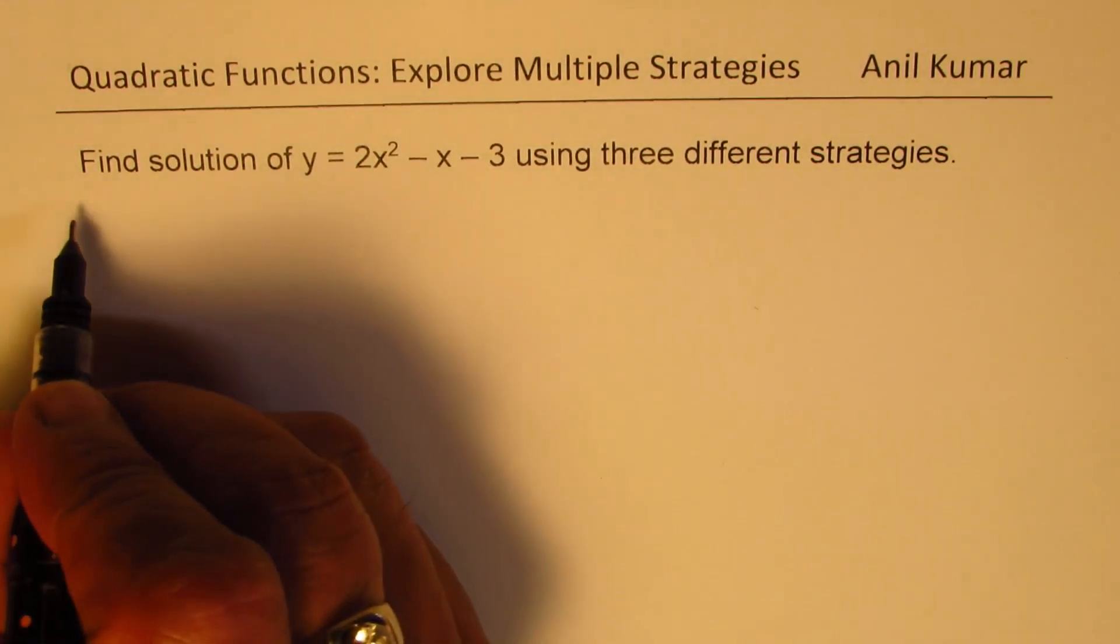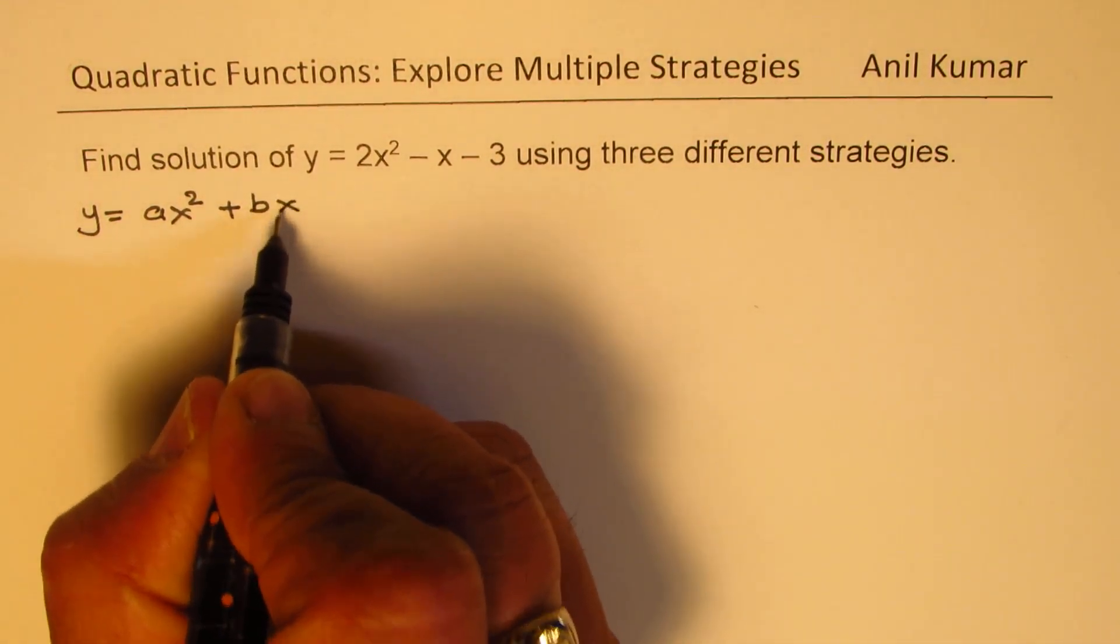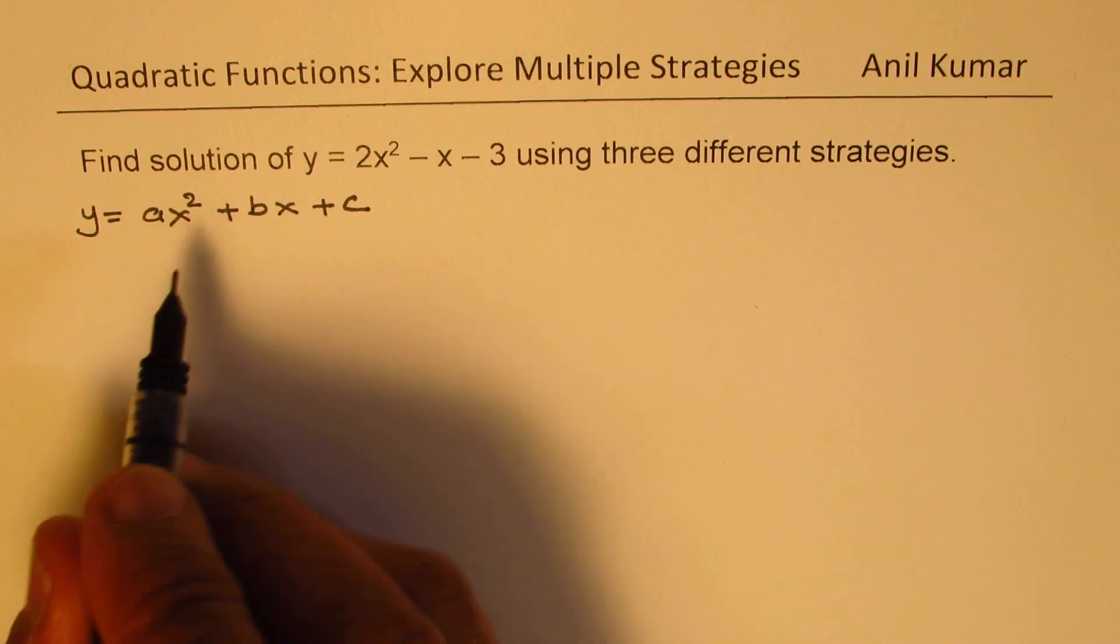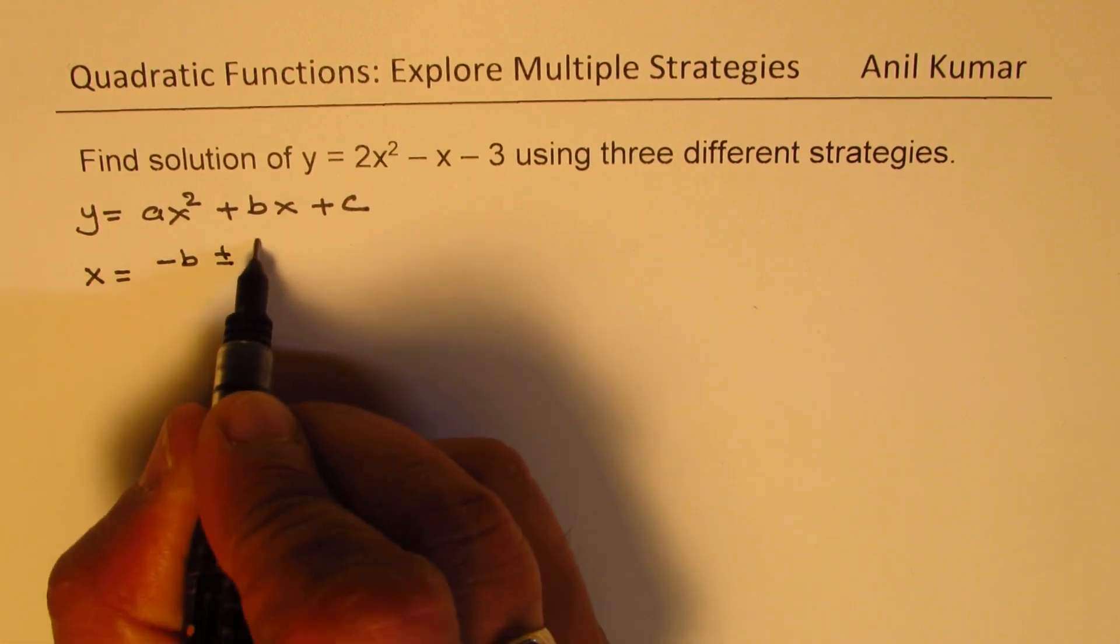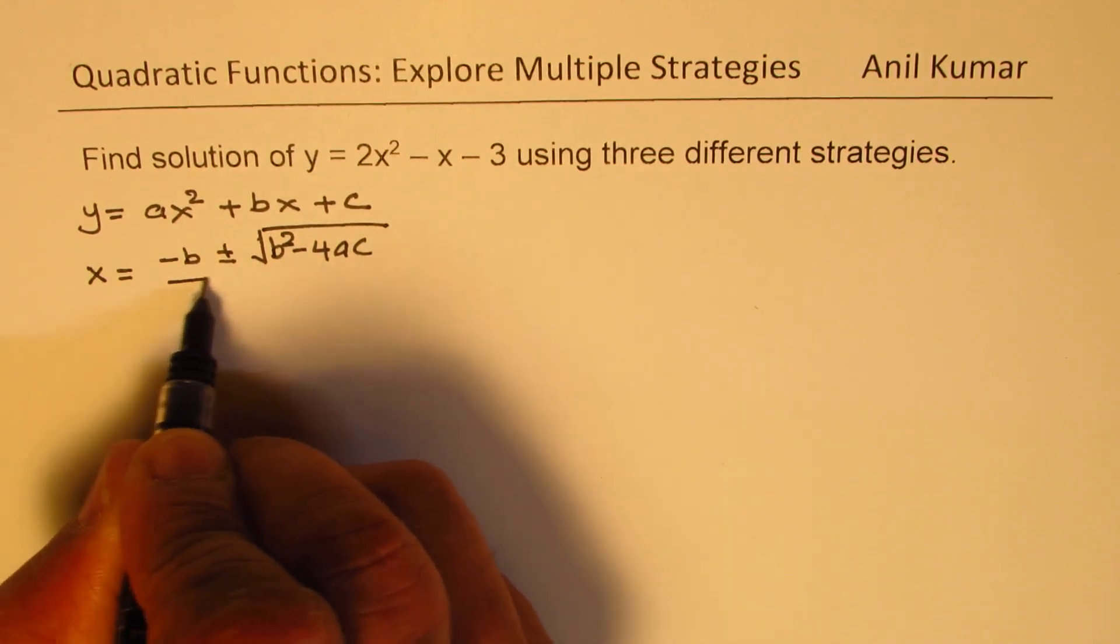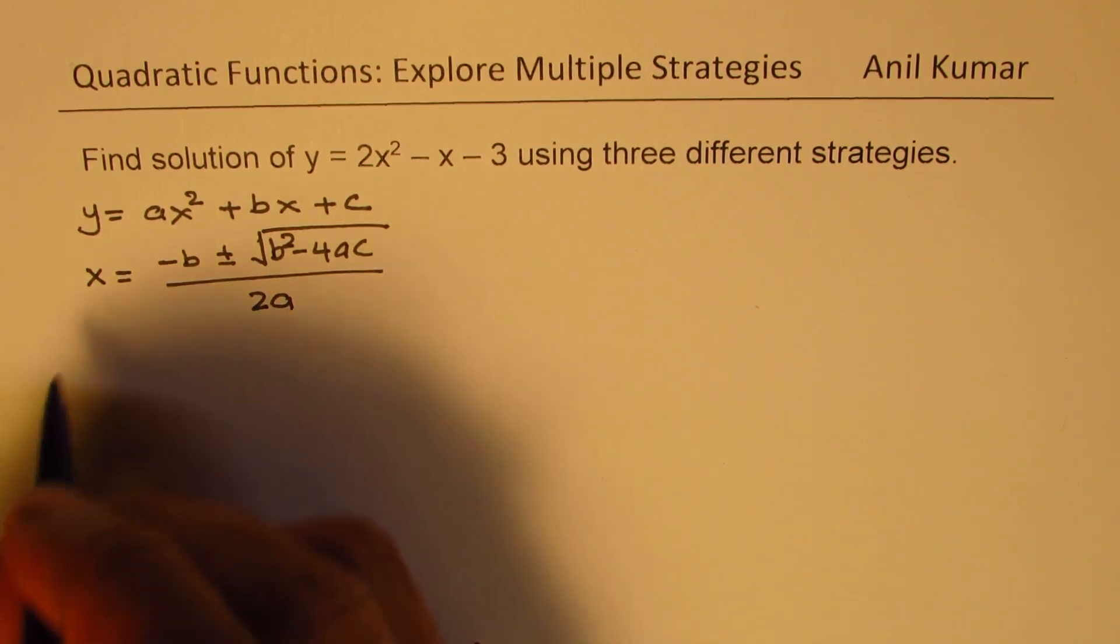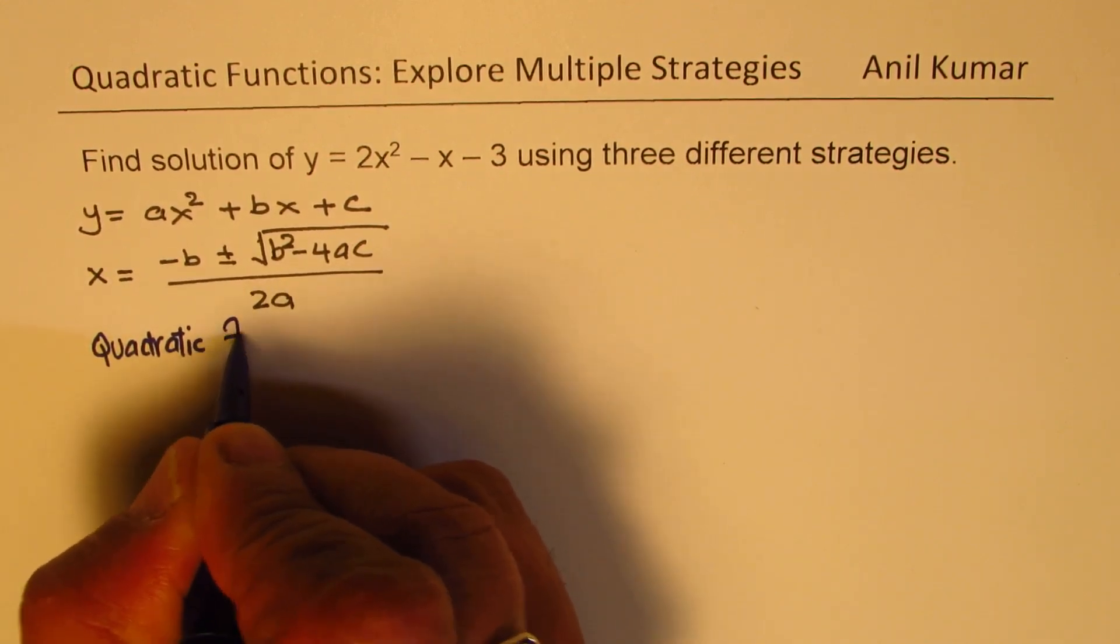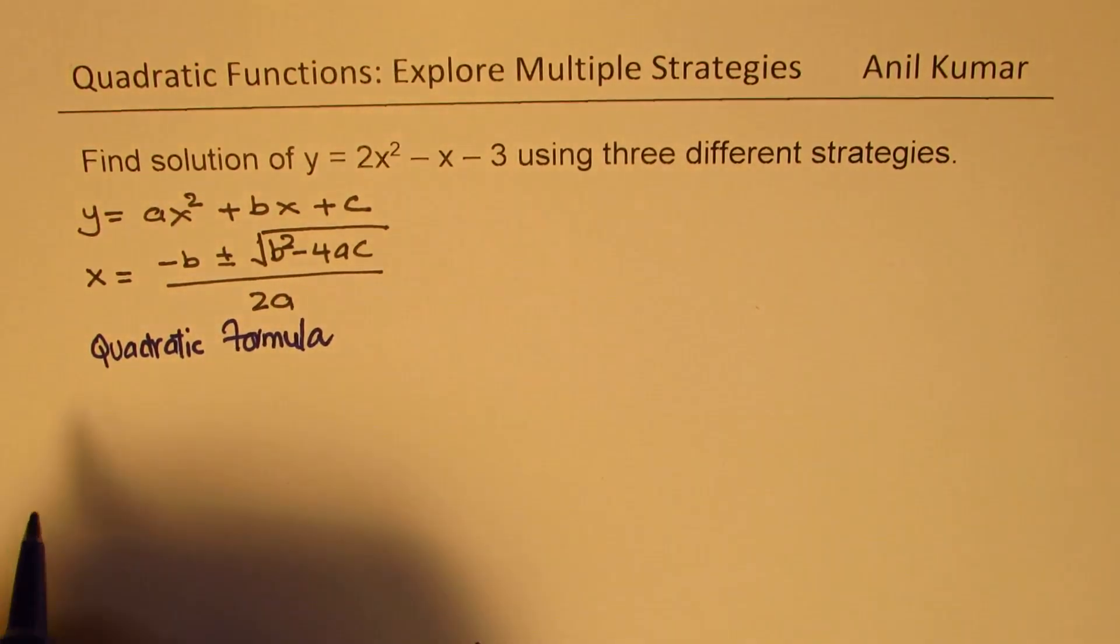So let me begin with a general equation y equals ax squared plus bx plus c. Now we could use a quadratic formula to find the solution: x equals minus b plus or minus square root of b squared minus 4ac over 2a. So that is a quadratic formula. And this formula always works.